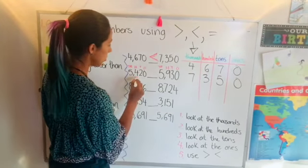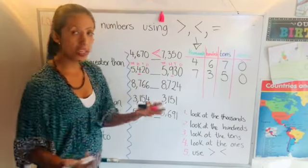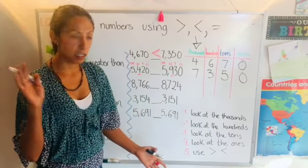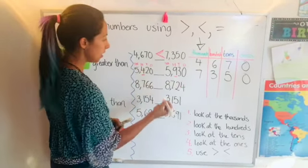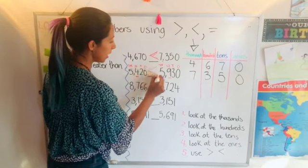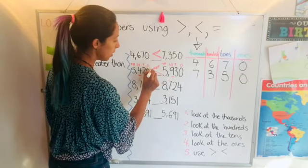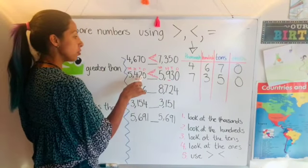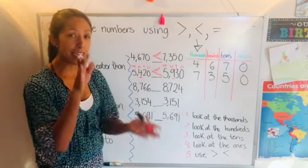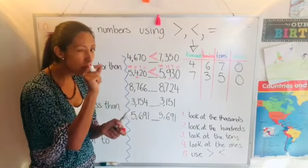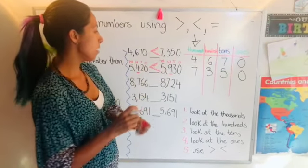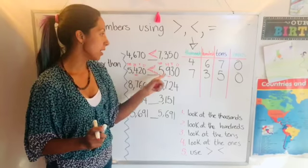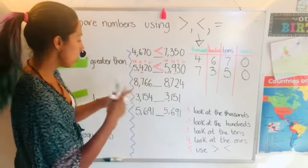So we're going to go to the hundreds. Which one is greater? Nine. So again the alligator will eat the greater, so 5420 is less than because it's smaller, five thousand nine hundred and thirty. Okay let's go with the next one.